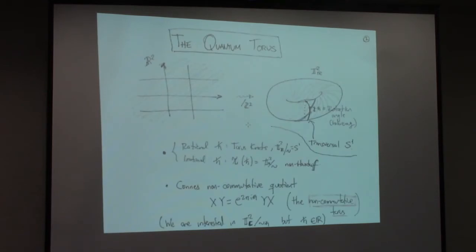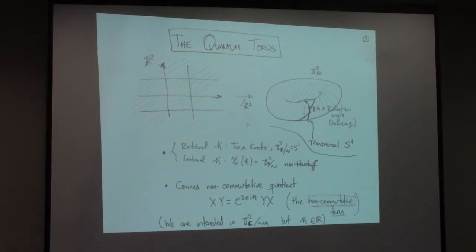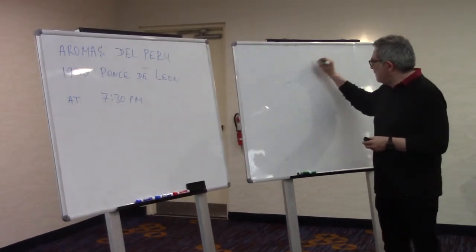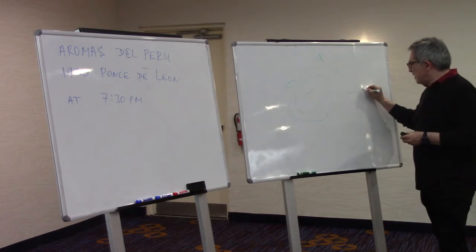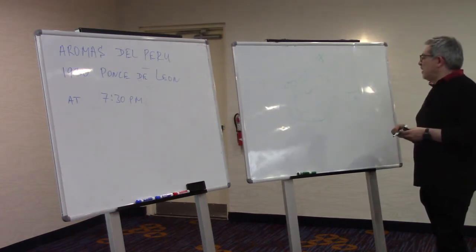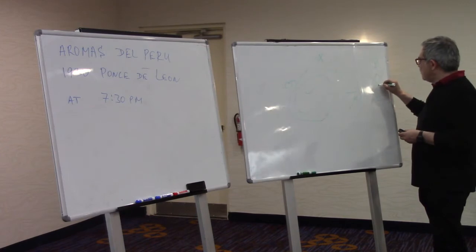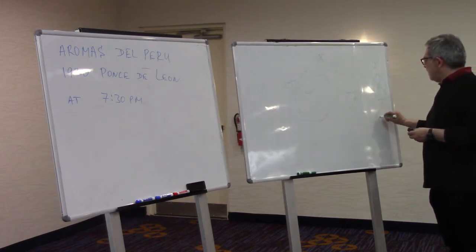Let's start slow and easy. Classical toric varieties are of course equivariant compactifications of tori. Traditionally you have a complex torus, and then you have a compactification — that is the toric variety. If it is projective Kähler, then you have the moment map, and you have this polytope, which is sort of dual to the fan. This is the classical picture.